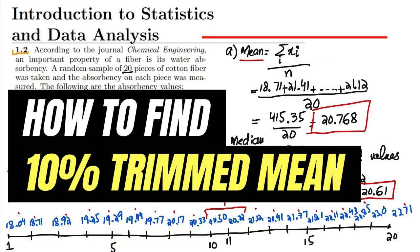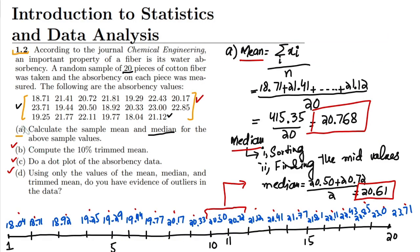Hello guys, I hope all of you are doing well. We're back with Question 1.2 from our book. Previously we saw the solution for Part A, so today we're going to talk about Part B, which asks us to compute the 10 percent trimmed mean.